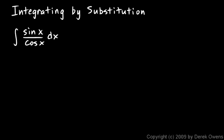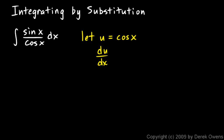We can do this with a substitution. I'm going to introduce a new variable — it's very common to call this variable u — and I'm going to say u is equal to cosine x. If u equals cosine x, then du/dx has to be the derivative of cosine, which is negative sine x, or we could say that du is equal to negative sine x dx.